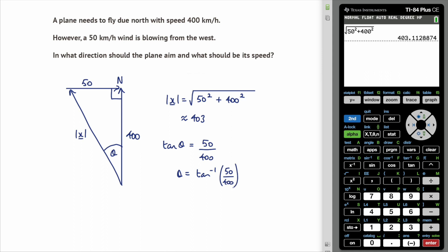Over to the calculator we've got tan to the minus 1, we've got 50 divided by 400 and press enter and we get approximately 7.12, so that's approximately 7.13 degrees. Therefore the plane must aim 7.13 degrees west of north at a speed of 403 kilometers per hour.